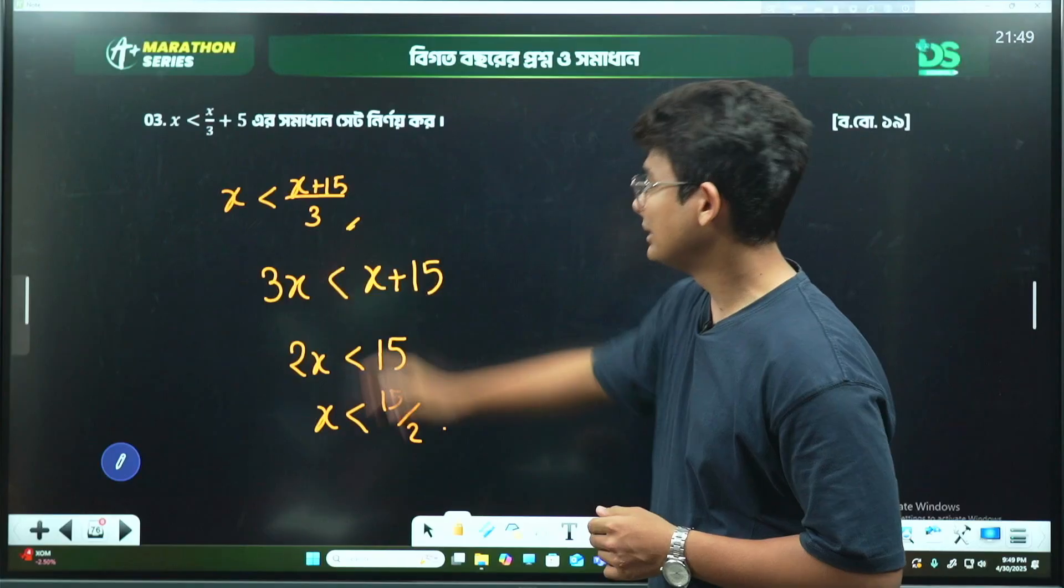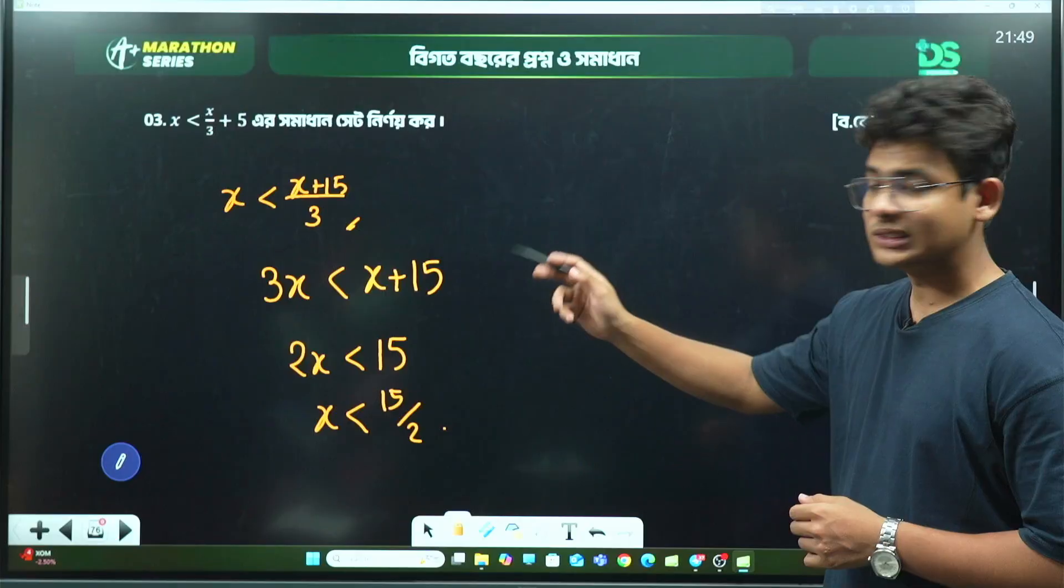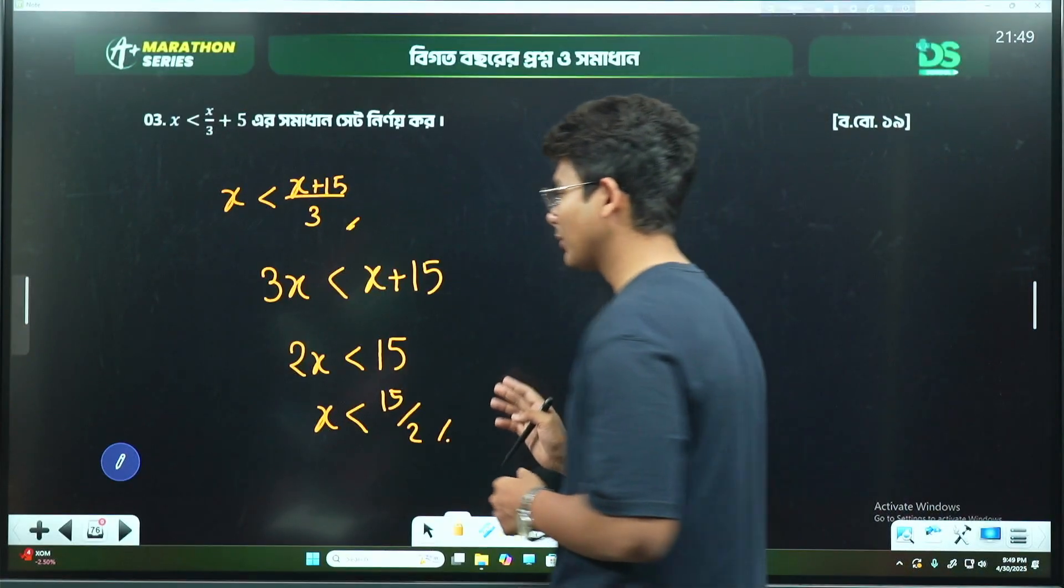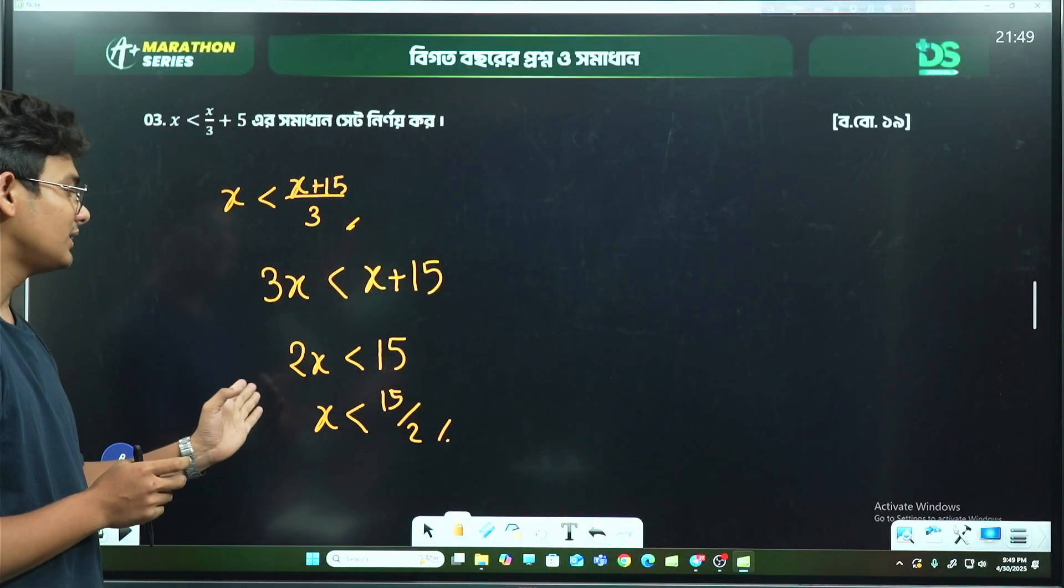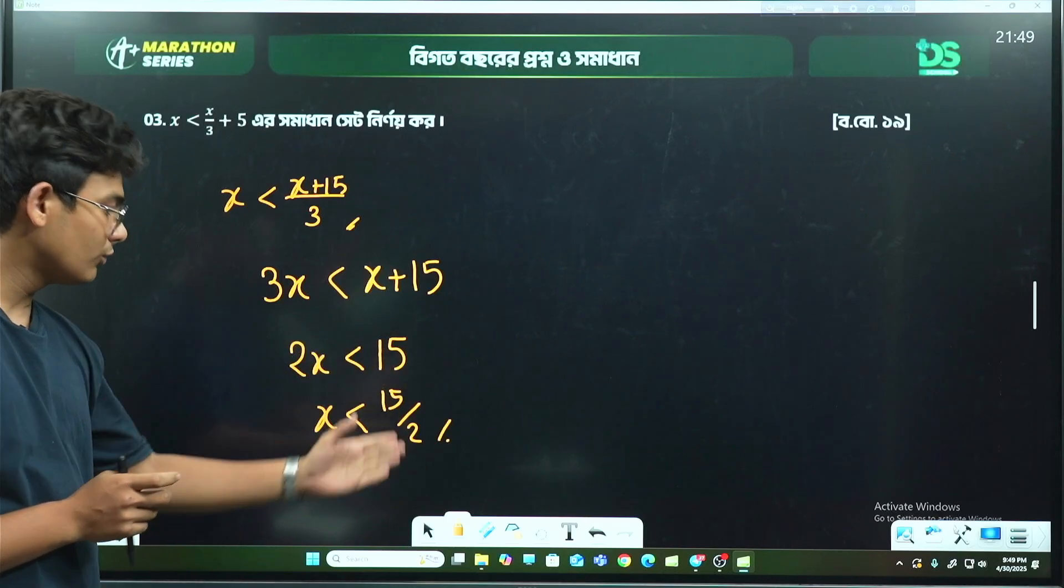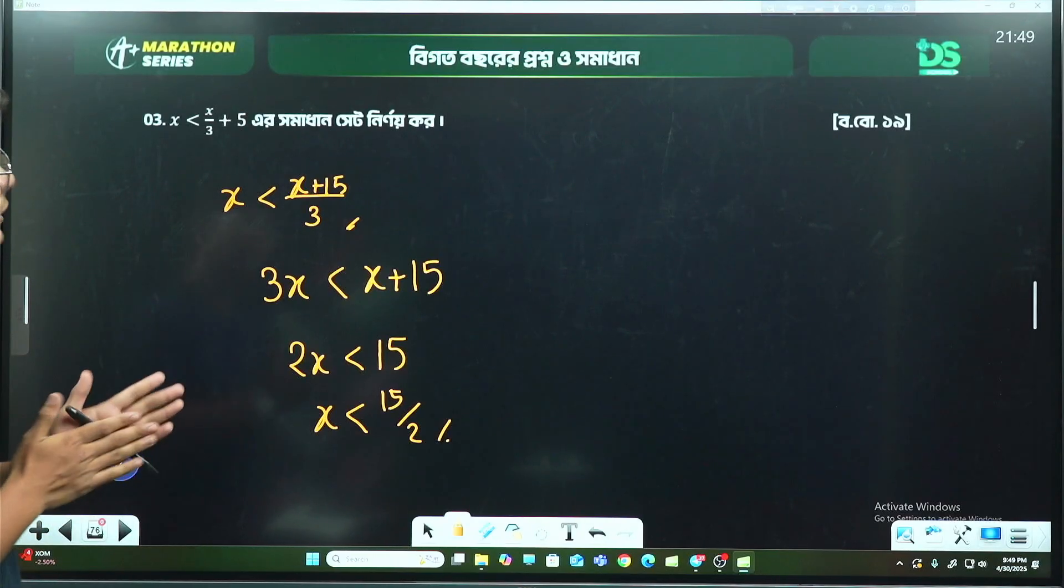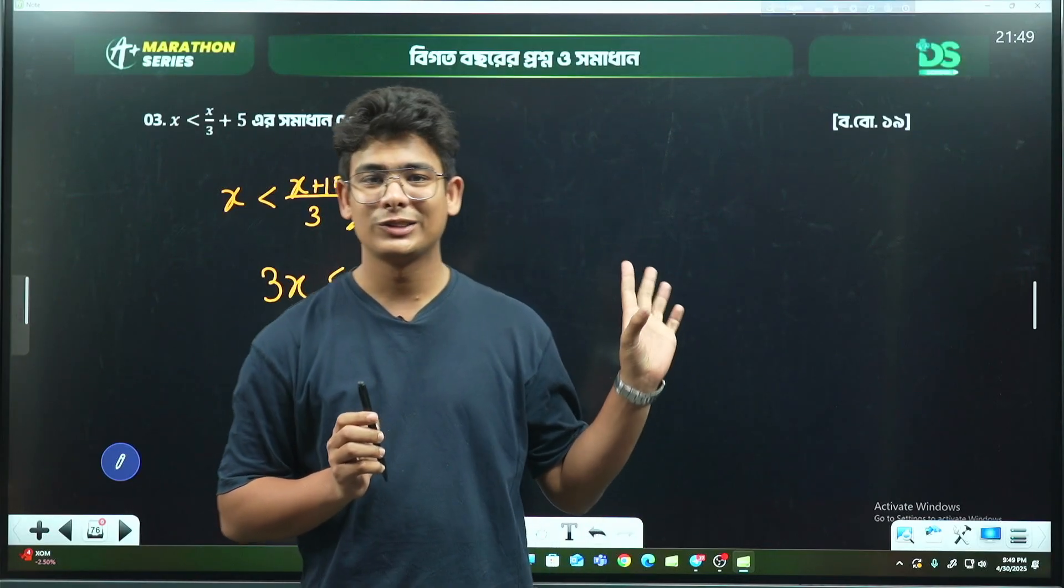The problem becomes: x < (x + 15)/3. Simplifying: 3x < x + 15. This gives us 3x - x < 15, so 2x < 15, therefore x < 15/2 or x < 7.5. That completes this problem, demonstrating the same inequality principles we covered.